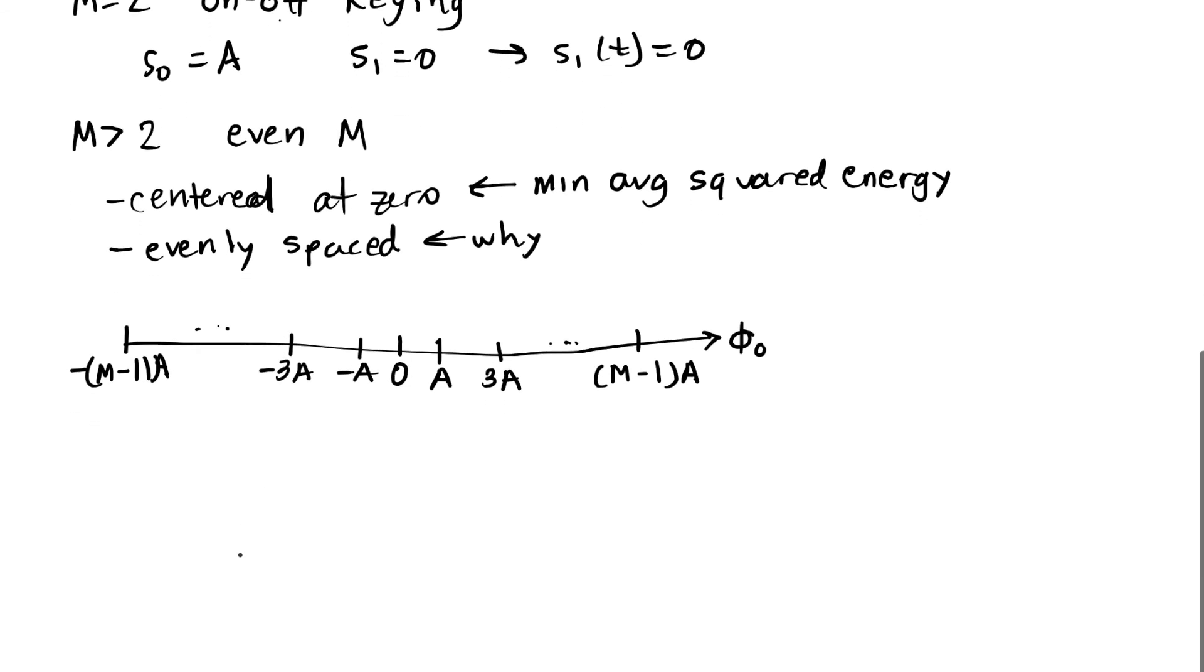What this does is that it gives us a certain amount of average energy. That is the average energy per symbol, assuming that each symbol is equally likely. We're basically saying I'm going to have 1 divided by the total number of symbols, and we're going to add in each squared energy.